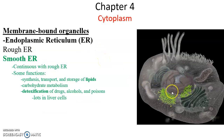The smooth endoplasmic reticulum is a continuation from the rough endoplasmic reticulum — they are one continuous structure. Its job has nothing to do with proteins because there are no ribosomes. Instead, it's involved in the synthesis, transport, and storage of lipids, and also has a role in carbohydrate metabolism. It even has a role in detoxification of drugs, alcohols, and poisons, which means there is a lot of smooth endoplasmic reticulum in liver cells.